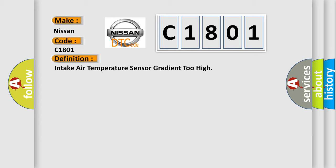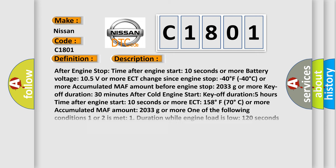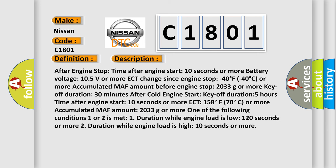Here is a short description of this DTC code. After engine stop, time after engine start must be 10 seconds or more; battery voltage 10.5 volts or more; ECT change since engine stop minus 40 degrees Fahrenheit to 40 degrees Celsius or more; accumulated MAP amount before engine stop 2033 grams or more; key off duration 30 minutes; after cold engine start key off duration 5 hours; time after engine start 10 seconds or more ECT.